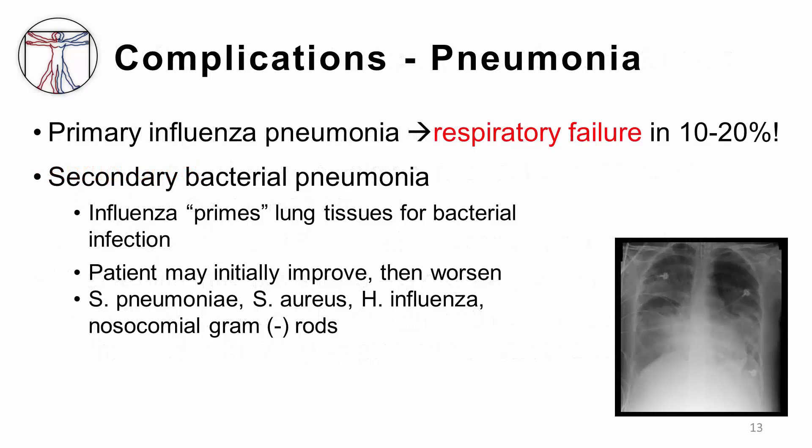Influenza virus infection is associated with significant morbidity and mortality, particularly related to severe respiratory complications such as pneumonia. Primary influenza pneumonia, meaning pneumonia caused by direct infection of the lung parenchyma by the influenza virus, has a mortality rate of between 10 and 20%. Onset is typically abrupt and dramatic, often progressing within 24 hours to severe disease with respiratory failure, shock, and even death. Non-fatal cases typically recover within a one to two week period after pneumonia onset, but residual lung disease can frequently occur.